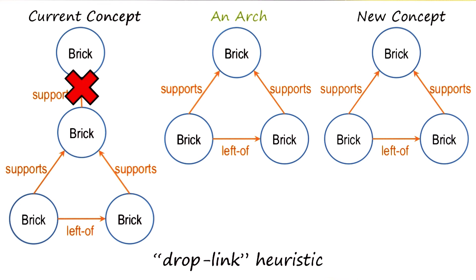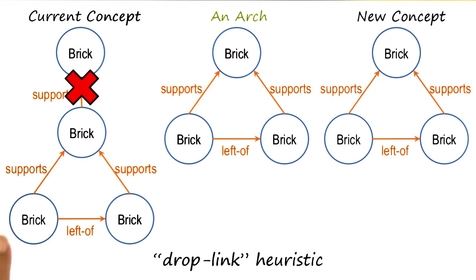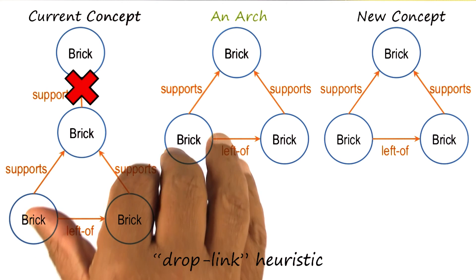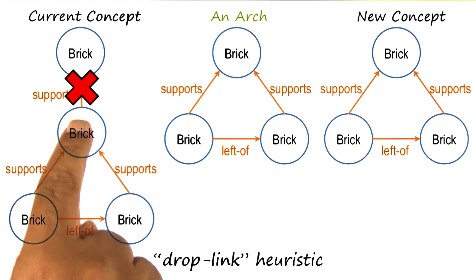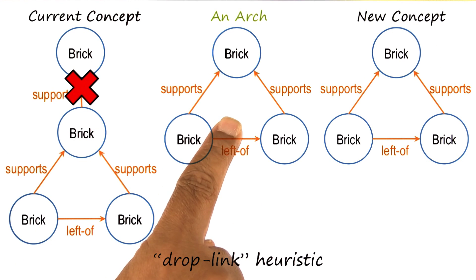So drop link heuristic is useful when the structure of the current concept definition and the structure of the new example have a lot of overlap. The overlap almost exactly, except for one link that is extra in the current concept definition. That extra link can be dropped because then the new definition will cover both the previous concept as well as the new example.